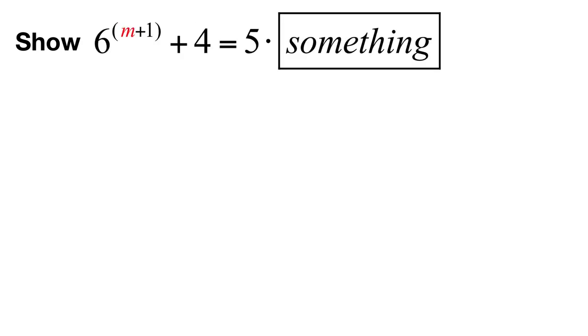That means we want to show that five divides the quantity six raised to the M plus one power plus four, which we'll rewrite as a multiplication problem. Six raised to the M plus one power plus four is equal to five times something.